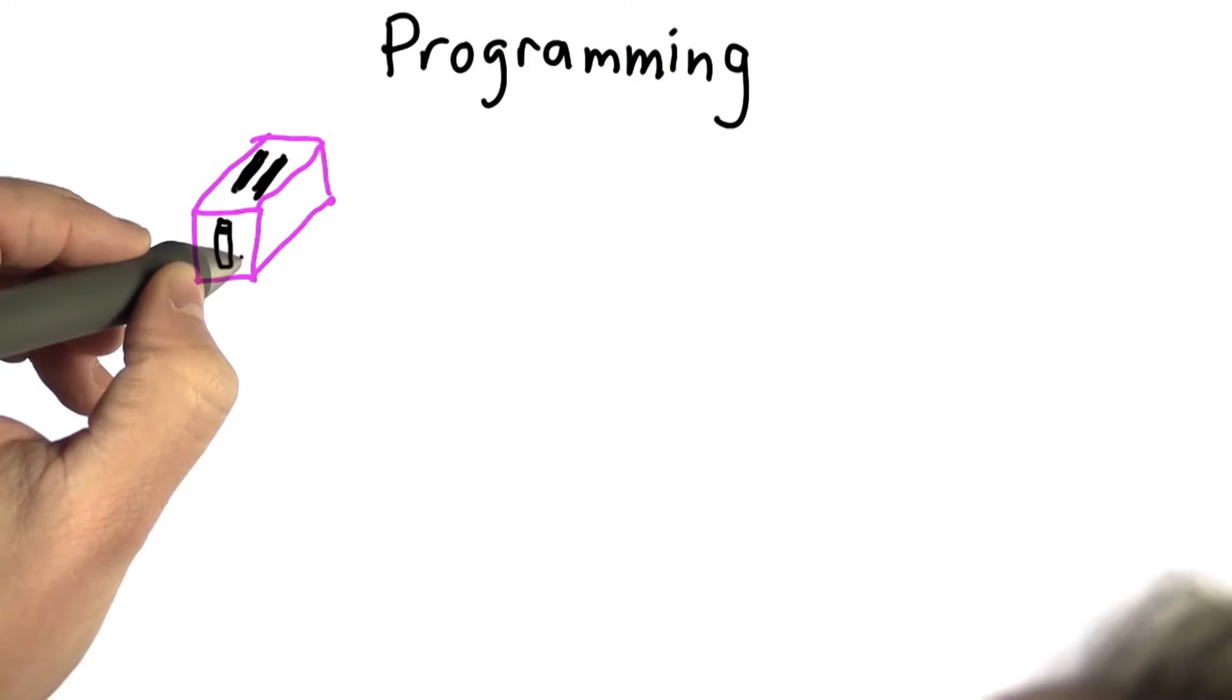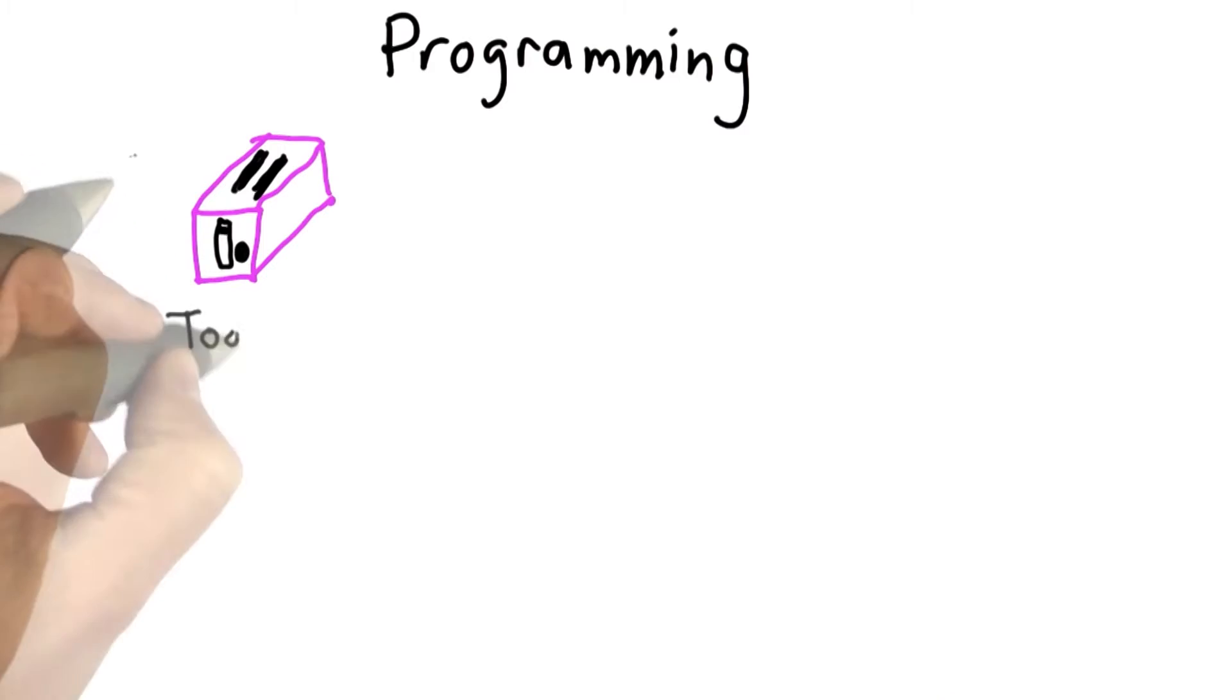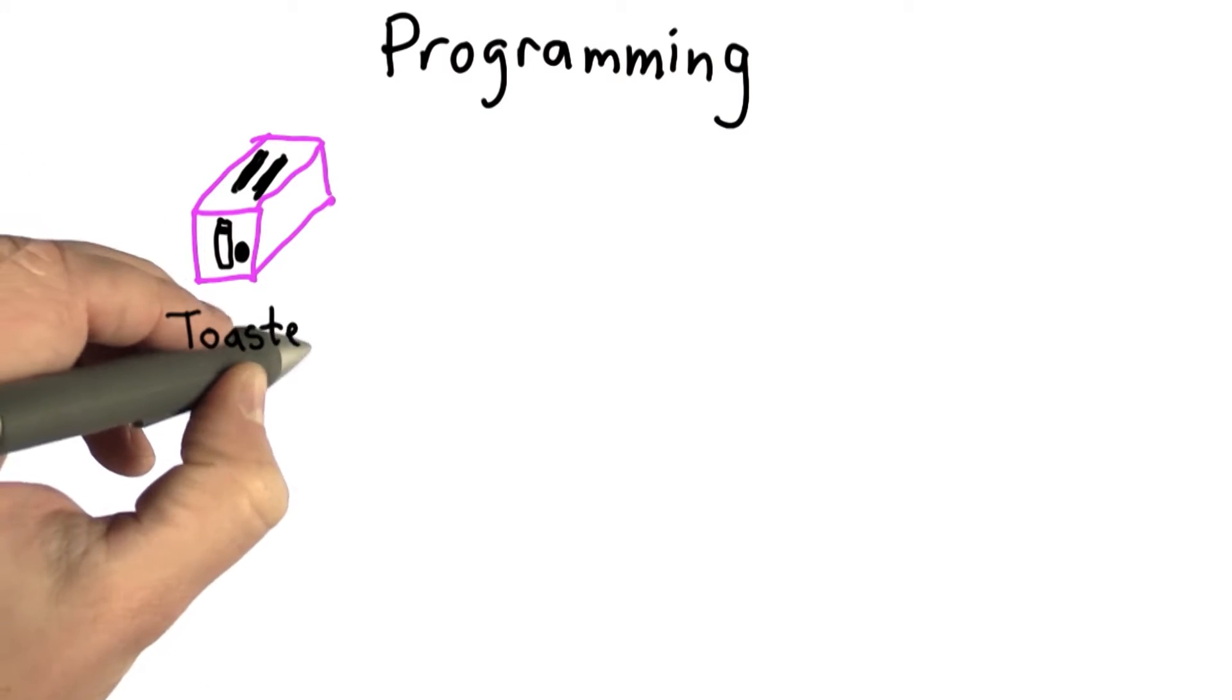Most machines are designed to do just one thing. This is supposed to be a toaster. It's more of a representational drawing than an accurate one.